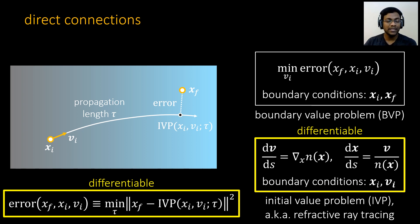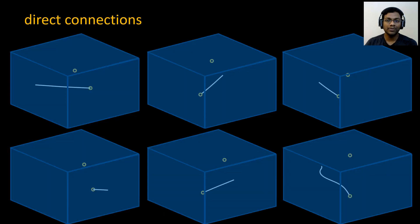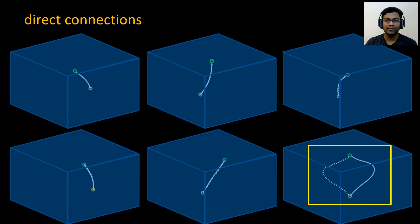We have used gradient descent to compute direct connections. For mathematical details, please refer to our paper. Here are a few examples of computing direct connections by solving several IVP problems via gradient descent. Let us solve direct connections again, but this time with a different initialization. Notice that while most cases converge to the same final curve, the bottom right case converges to a different curve.